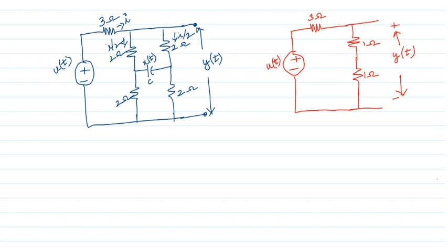Since these two points are at the same potential, these two ohms and two ohms are in parallel — it becomes one ohm. The current flowing through this is still i. But physically, these two circuits are entirely different. Concept-wise, they are functioning in the same way — by looking from the input and output point of view, the circuit is the same, but internally it is not.